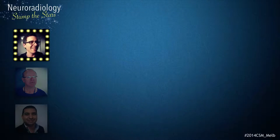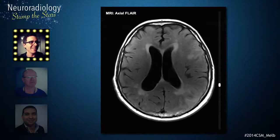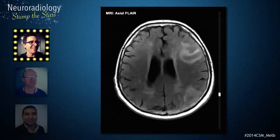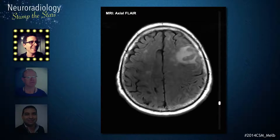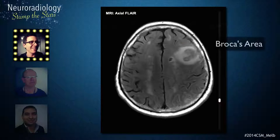On FLAIR, there is widespread high T2 signal with a relatively circumscribed region with some positive mass effect involving the left frontal lobe. This involves Broca's area, accounting for the patient's expressive dysphagia.